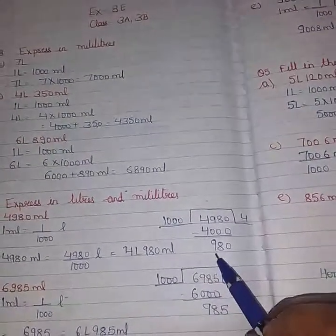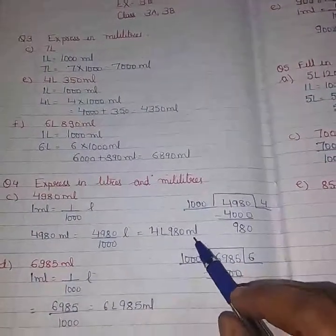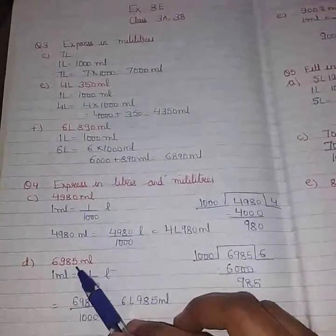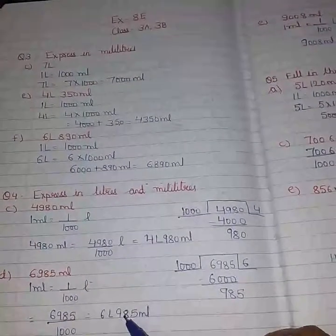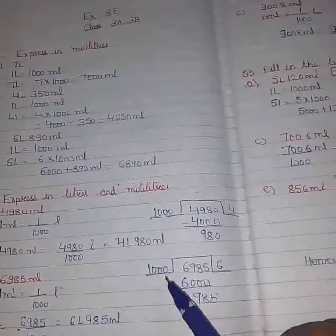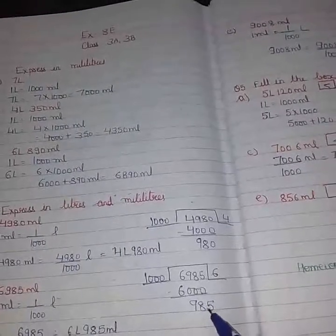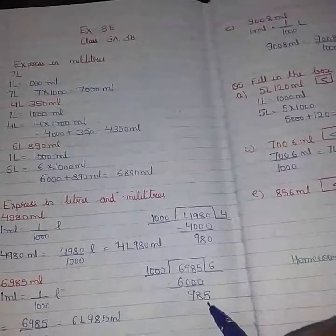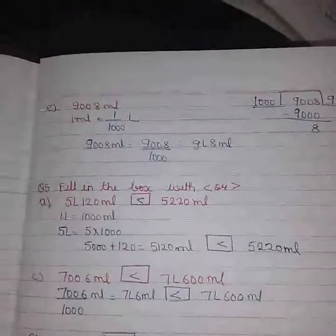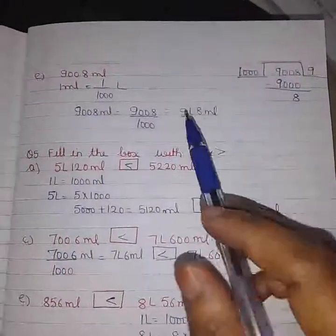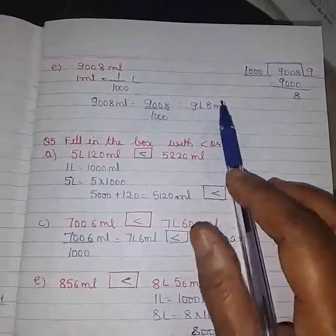6985 ml, then we will divide the number by 1000. After subtraction, 985 is remaining here. This will become ml and this will become liters. Next is 9008 ml, same we will divide by 1000, so after division 9 liters and 8 ml is the answer for this.